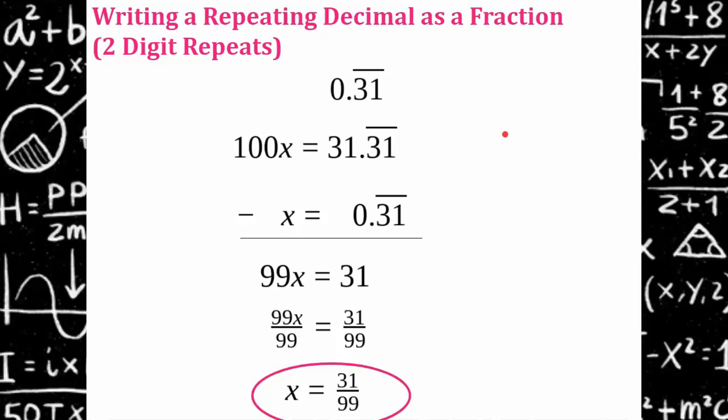Go ahead, try it on your calculator. 31 divided by 99. Again, I think it's pretty magical.